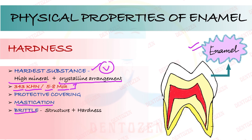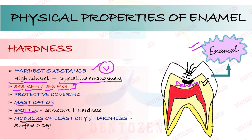Enamel needs dentine below it to remain intact. If dentine gets lost — for example if there is a cavity and dentine gets destroyed — the support for enamel will be gone. This unsupported enamel will break down and fracture easily. So the presence of sound dentine is very important for the integrity of enamel. The modulus of elasticity and hardness is more on the surface than at the dentino-enamel junction.